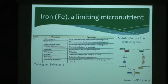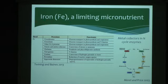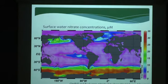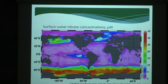If phytoplankton don't have enough iron, they can't grow as effectively. They also don't take up nitrogen, so you end up with residual nitrate in surface waters. This map shows surface water nitrate concentrations in the global ocean — high concentrations in warm colors, low in cool colors. Regions with high surface nitrate are considered iron-limited; we call them HNLC — high nutrient, lower-than-expected chlorophyll. The Subarctic Pacific, equatorial Pacific, and Southern Ocean are the big three, estimated from models to cover roughly 40% of the surface ocean.